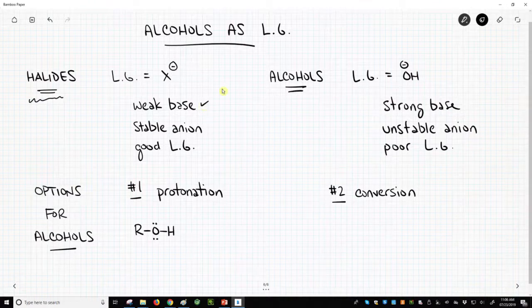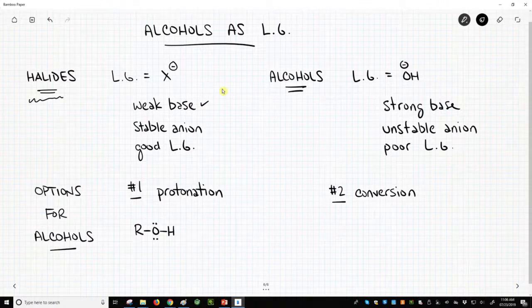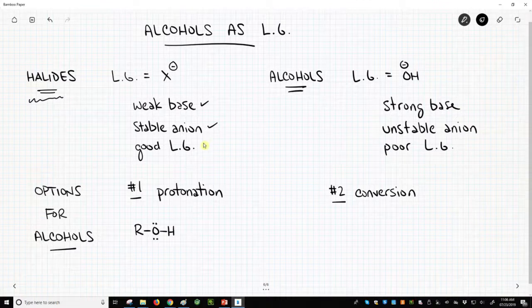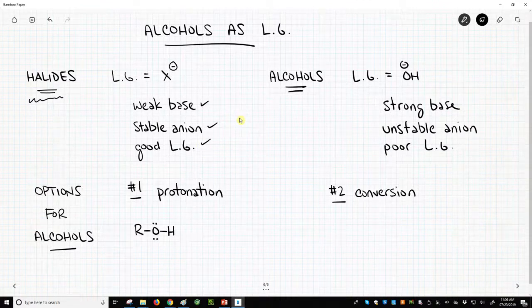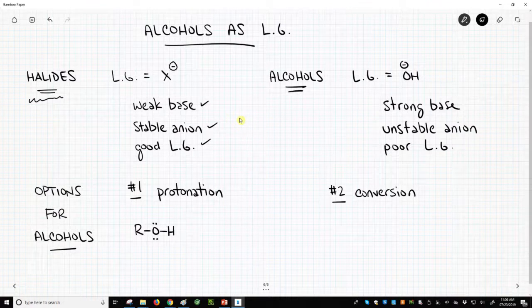These are all really weak bases. As weak bases, they're unreactive. They're stable anions, and stable anions make good leaving groups. Let's look now at alcohols because we now want to do chemistry on alcohols.